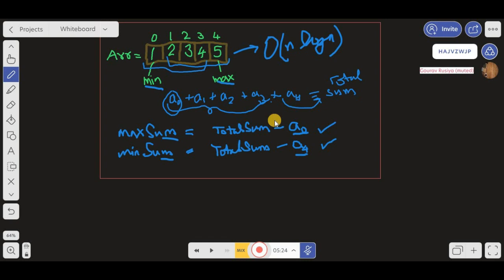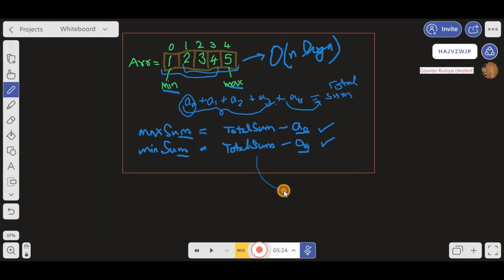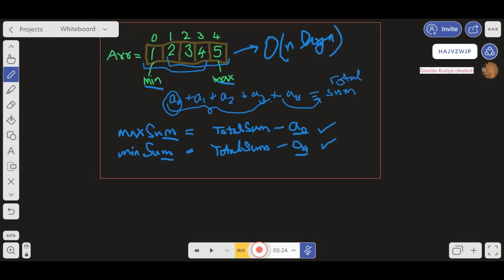Now this problem becomes distributed into two subproblems. The first problem is to get the total sum, which is similar to the simple array sum which we have already covered. The second subproblem is to find the minimum and maximum number from the unsorted array. The time complexity for this approach will be O(n) because we are traversing the array only once.